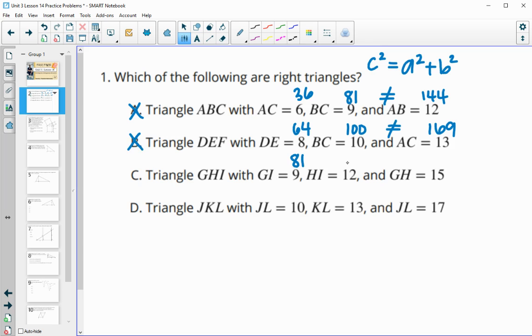In part C, 9 squared is 81, 12 squared is 144, and 15 squared is 225. 81 plus 144 is 225, so these are equal to each other, so this one is a right triangle.